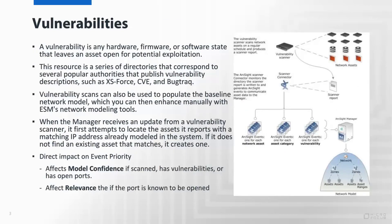The first resource type in the asset model is vulnerabilities. They are any piece of hardware, firmware, or software that ultimately leaves the asset open for exploitation, whether tracked through a CVE or bug track. Vulnerabilities are used to map to individual assets once identified, typically through an ingest from a scanner connector such as Qualys or Rapid7. Those values are then attributed to the individual asset, helping to drive the threat level formula and the event priority associated to that asset.